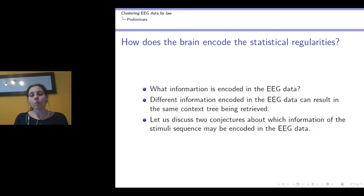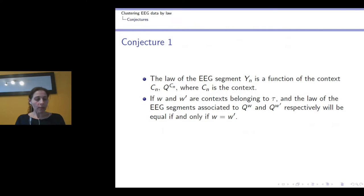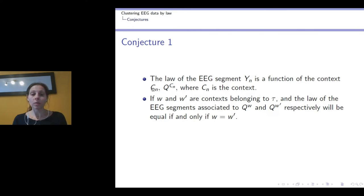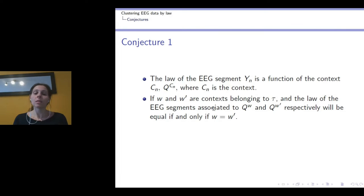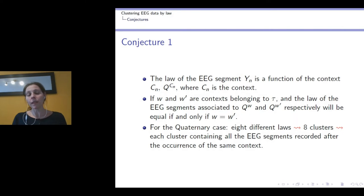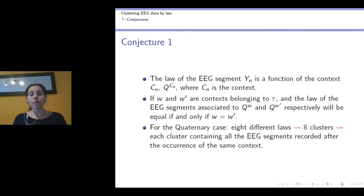Let us discuss two conjectures about which information of the stimuli sequence may be encoded in the EEG dataset. The first conjecture, introduced by Hernández et al., is that the law of the EEG segment is a function of the corresponding context in the sequence of stimuli. If we have two different contexts that belong to the same context tree, their associated EEG segment laws are the same if and only if the contexts are the same — giving eight different laws represented by the tree's leaves, each defining one cluster.